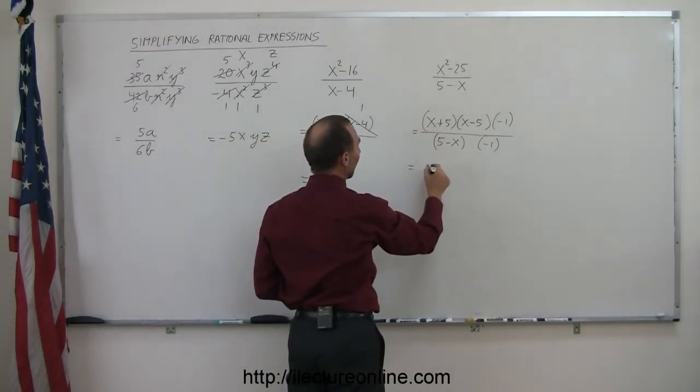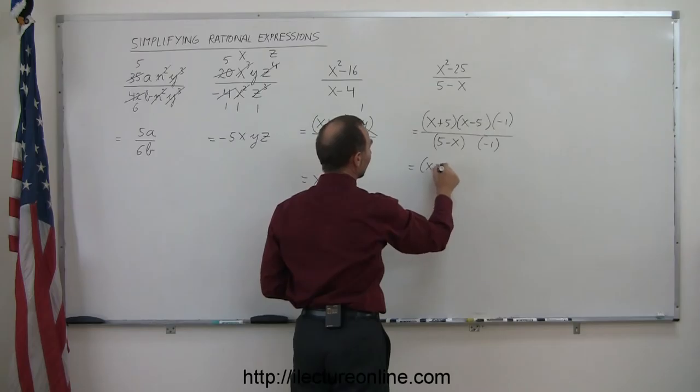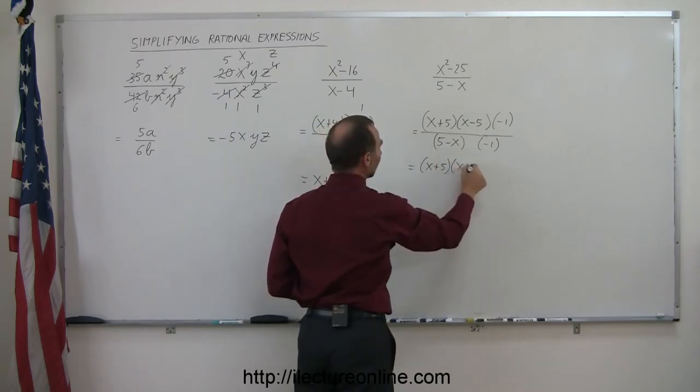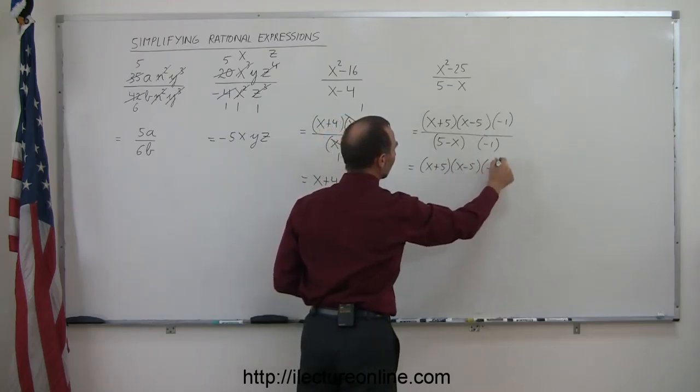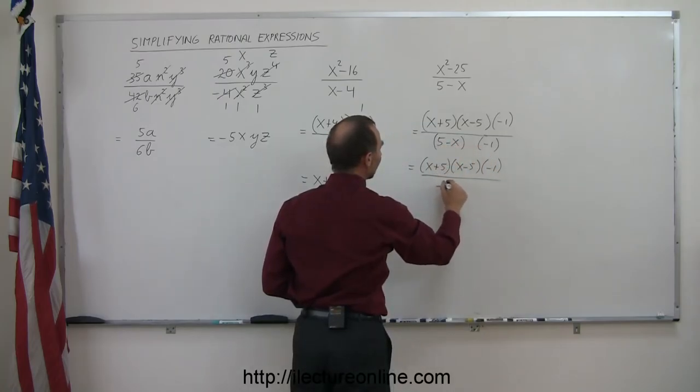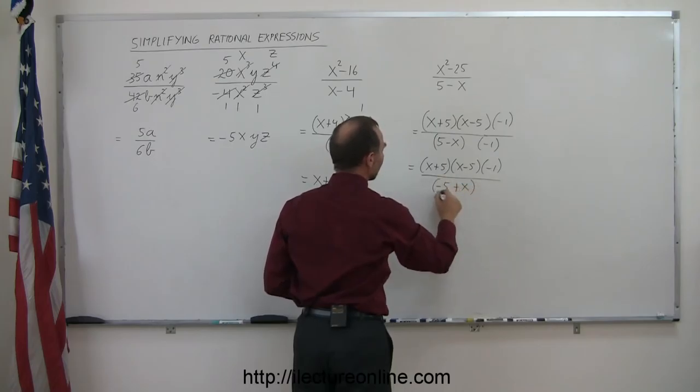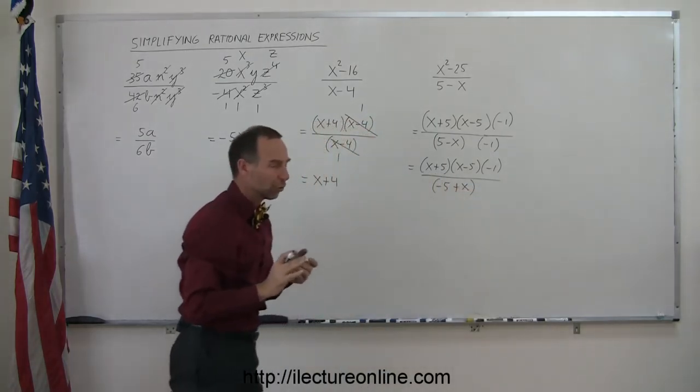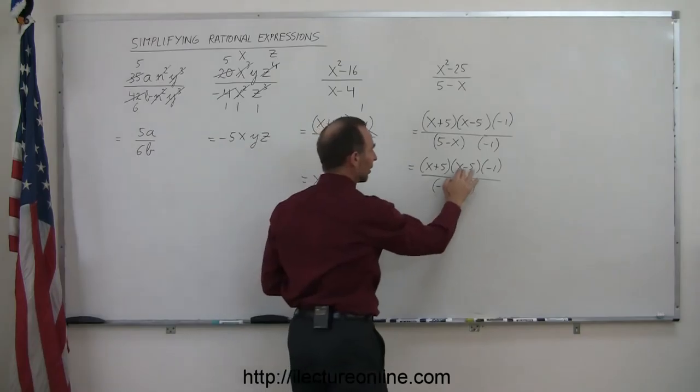So I can now write this as x plus 5 times an x minus 5 times a minus 1 divided by when I apply this negative 1, this becomes a minus 5. And I apply this over here, that becomes a plus x. And then if I rearrange that just so you can see that this is really the same as that,